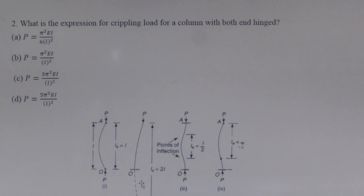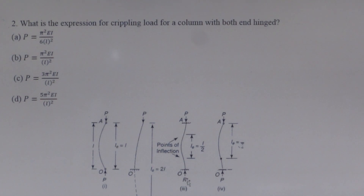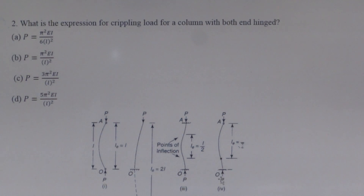In the second case, when one end of the column is fixed and the other end is free, the effective length changes and the load carrying capacity formula is adjusted accordingly. In the last case, when one end of the column is fixed and the other end is hinged, the load carrying capacity is equal to π²EI upon L².